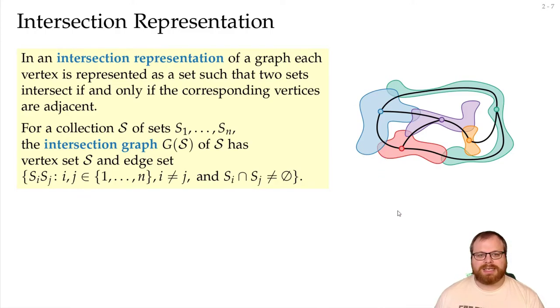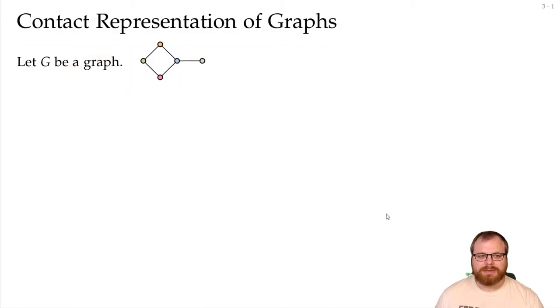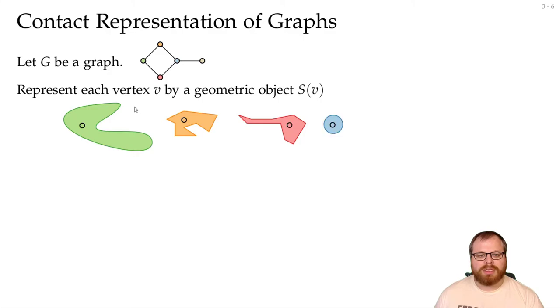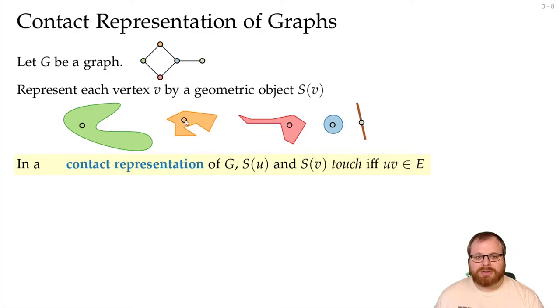A special case of intersection representations are contact representations. So let's say we have a given graph, and we represent every vertex again by a geometric object. Now the difference to intersection representations is that here we only allow them to touch. So in a contact representation, the sets corresponding to two vertices touch if and only if we have the edge. So this here would be a contact representation. This is also an intersection representation. But not every intersection representation is a contact representation, because here the interiors must be completely disjoint.